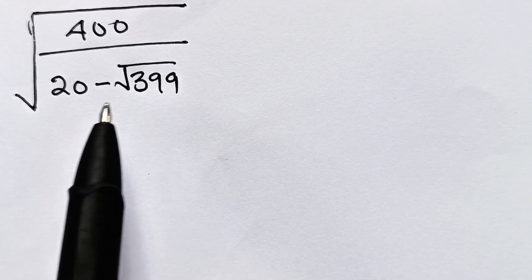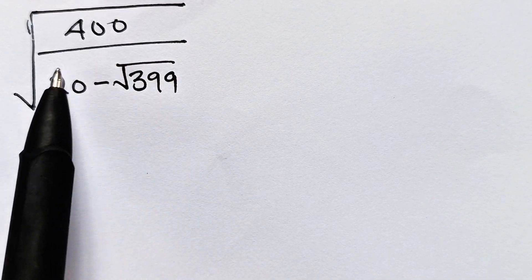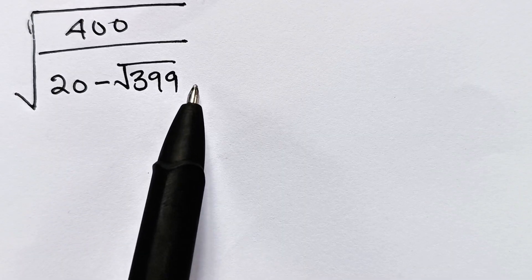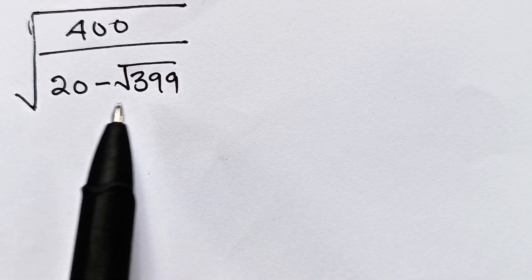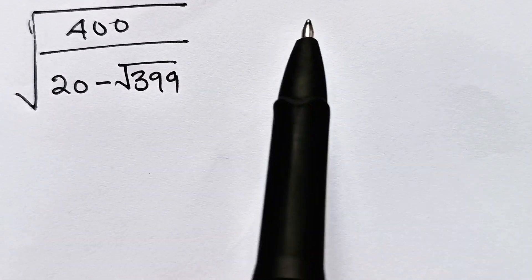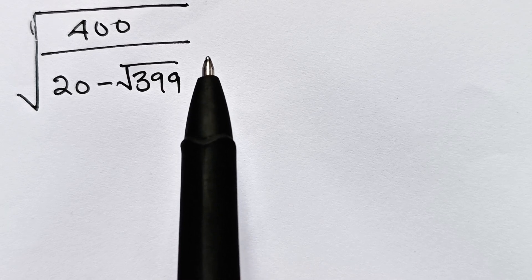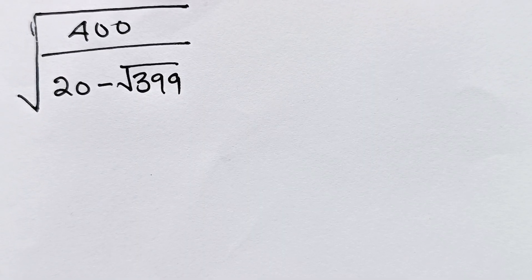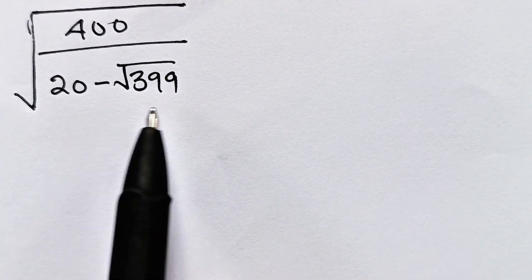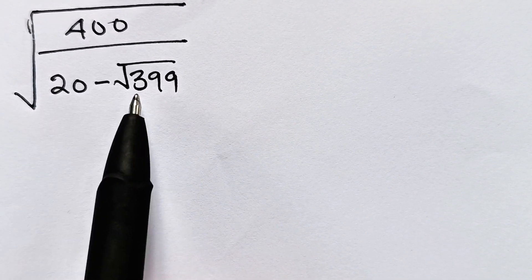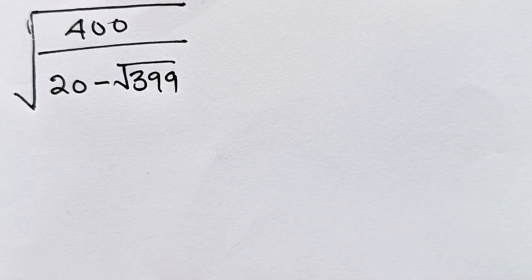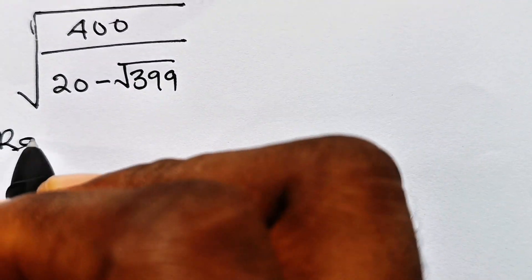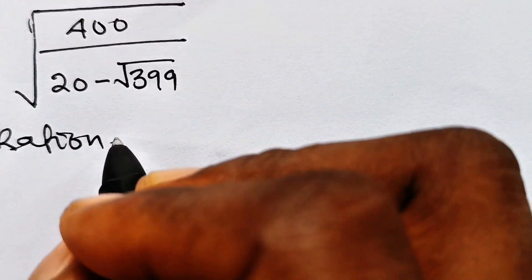The first thing we will do is to rationalize the denominator. To rationalize the denominator, we are going to multiply and divide by the conjugate of the denominator. The conjugate of the denominator is 20 plus root 399. So, we are going to rationalize first.